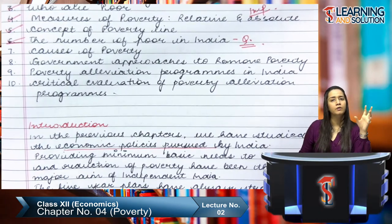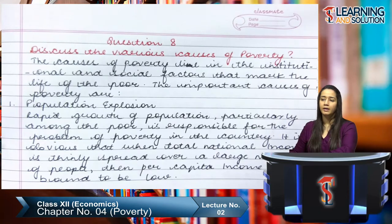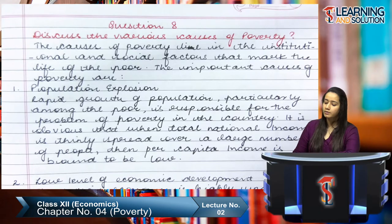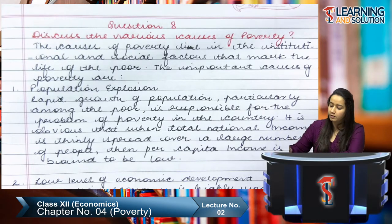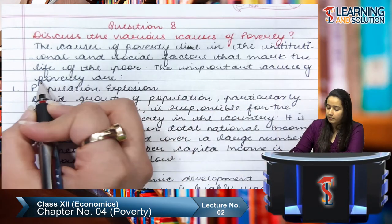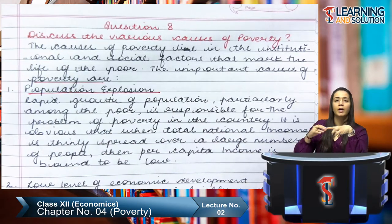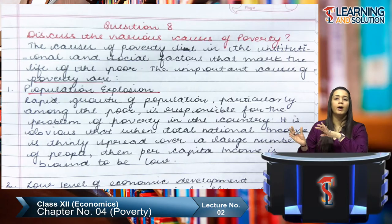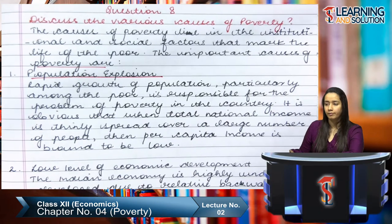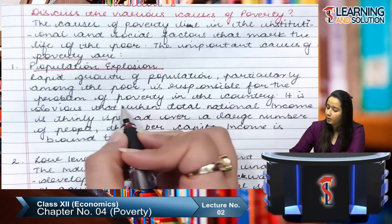Now our next topic: causes of poverty — poverty ke causes kya hai. The important causes of poverty are institutional and social factors. The first cause is population explosion. Our population keeps increasing while our resources keep getting split further, so rapid growth of population, particularly among the poor, is responsible for the problem of poverty in the country.